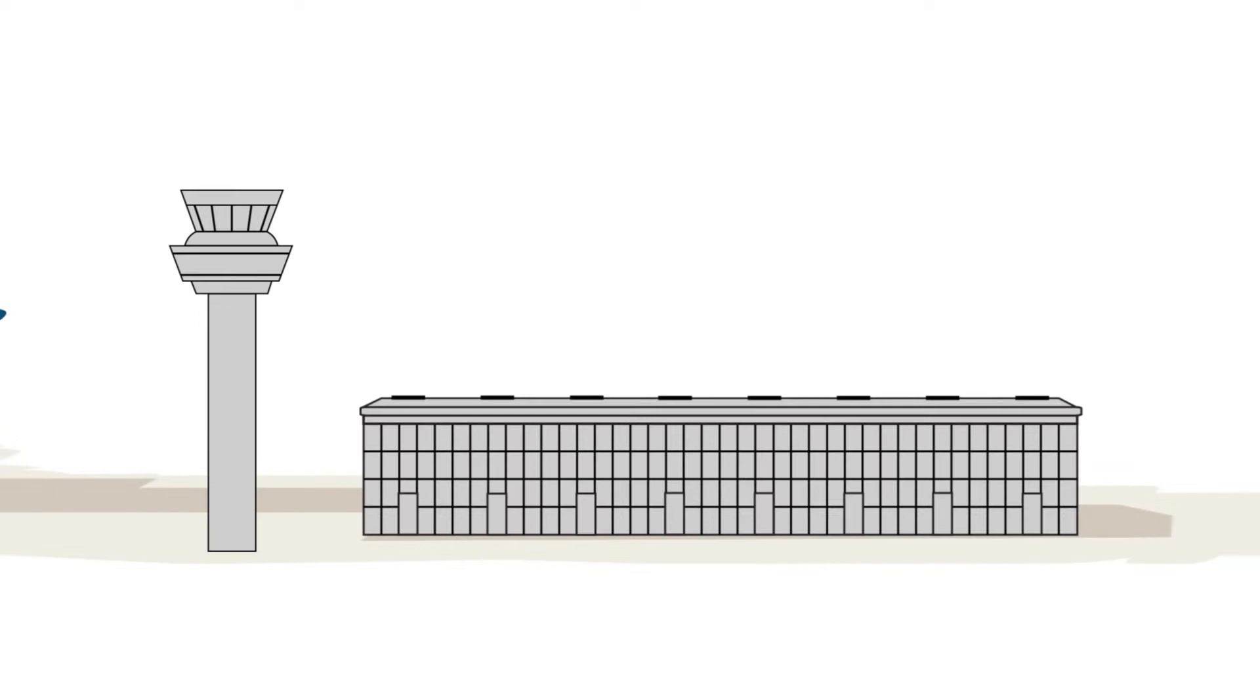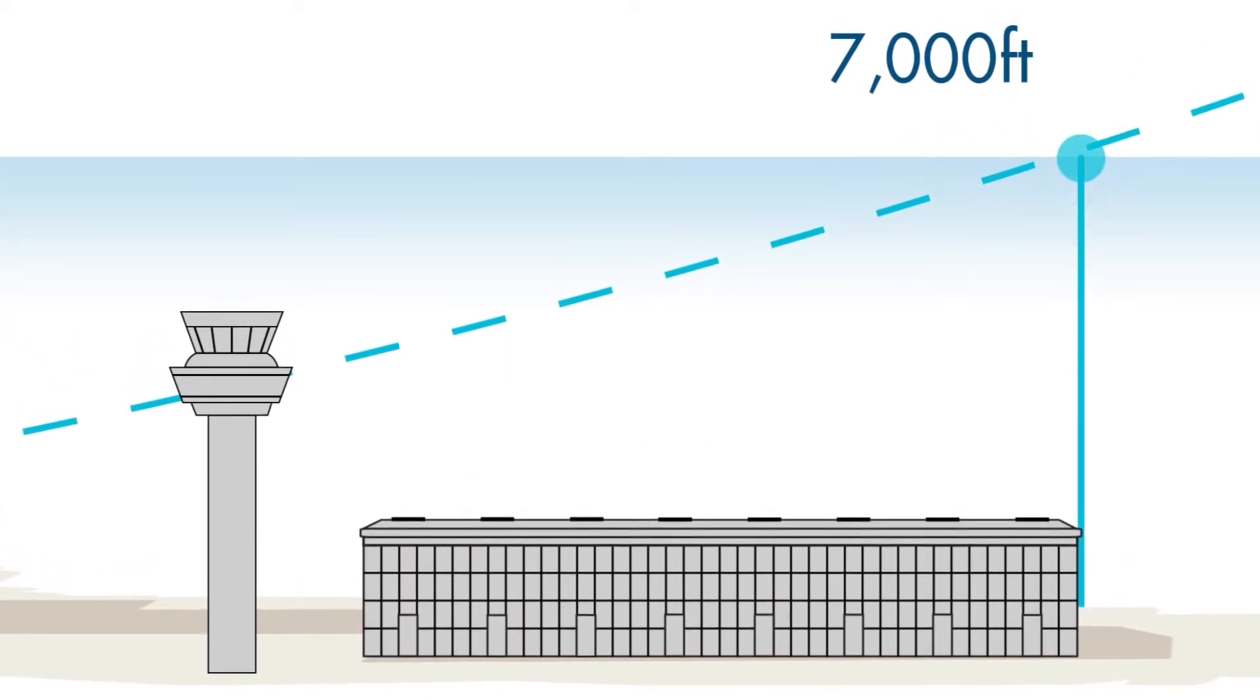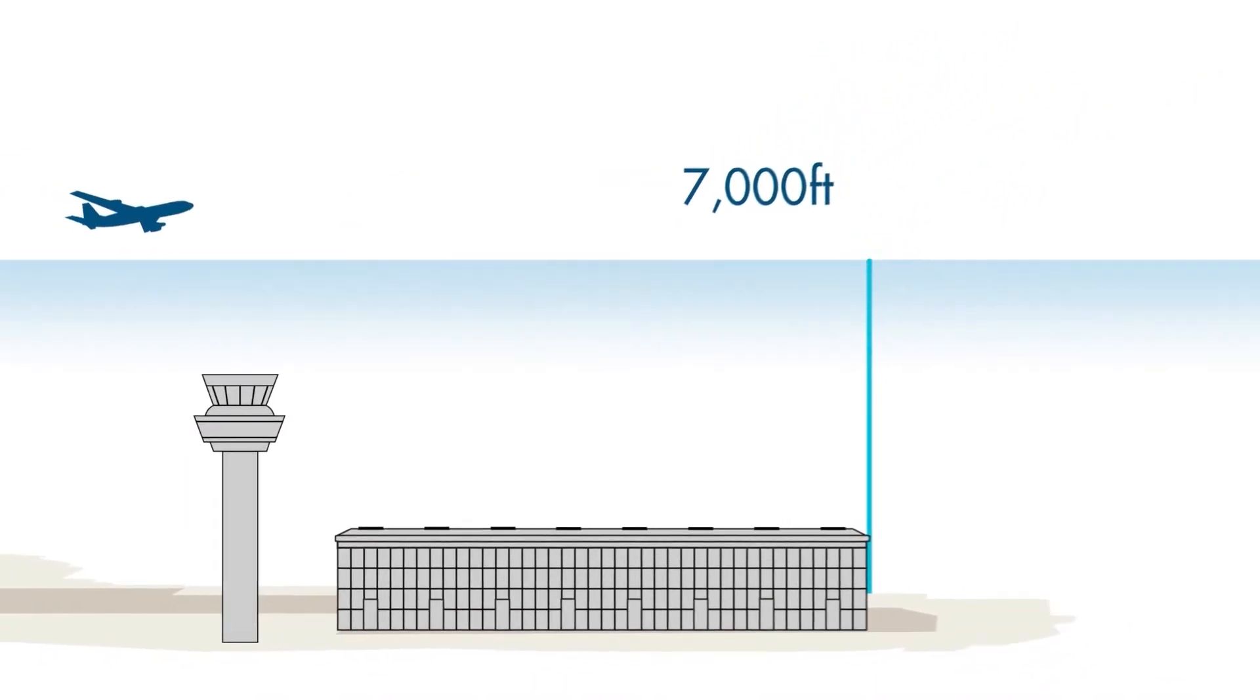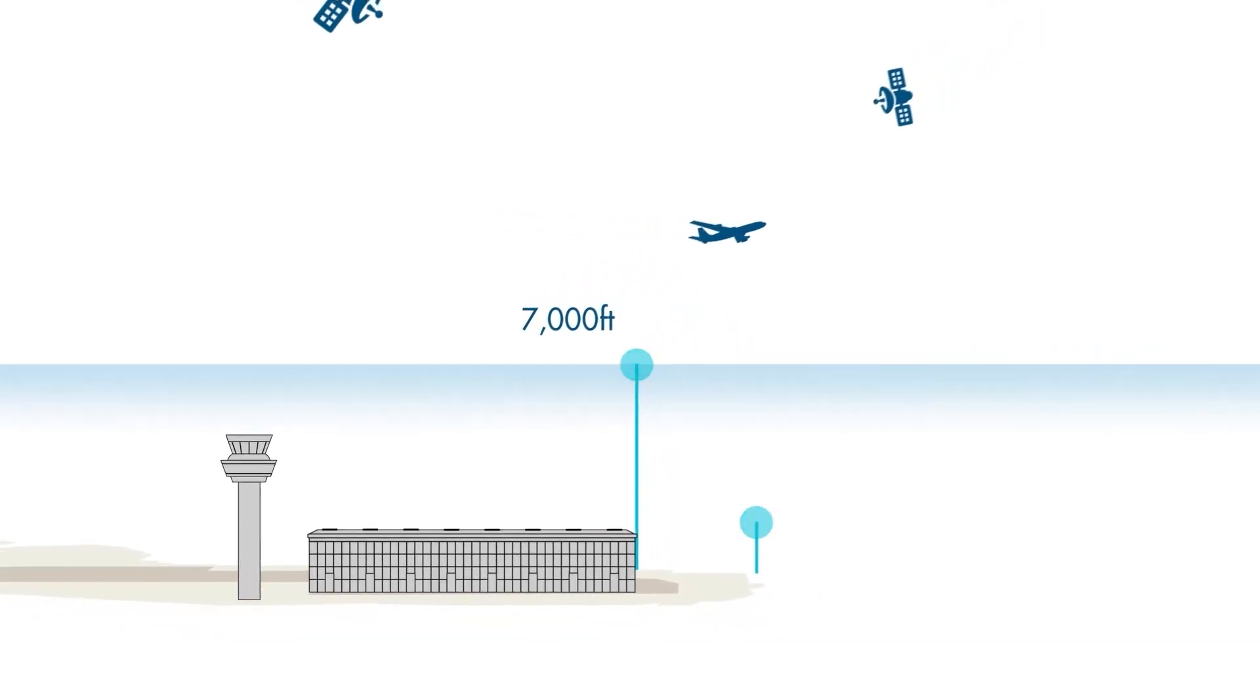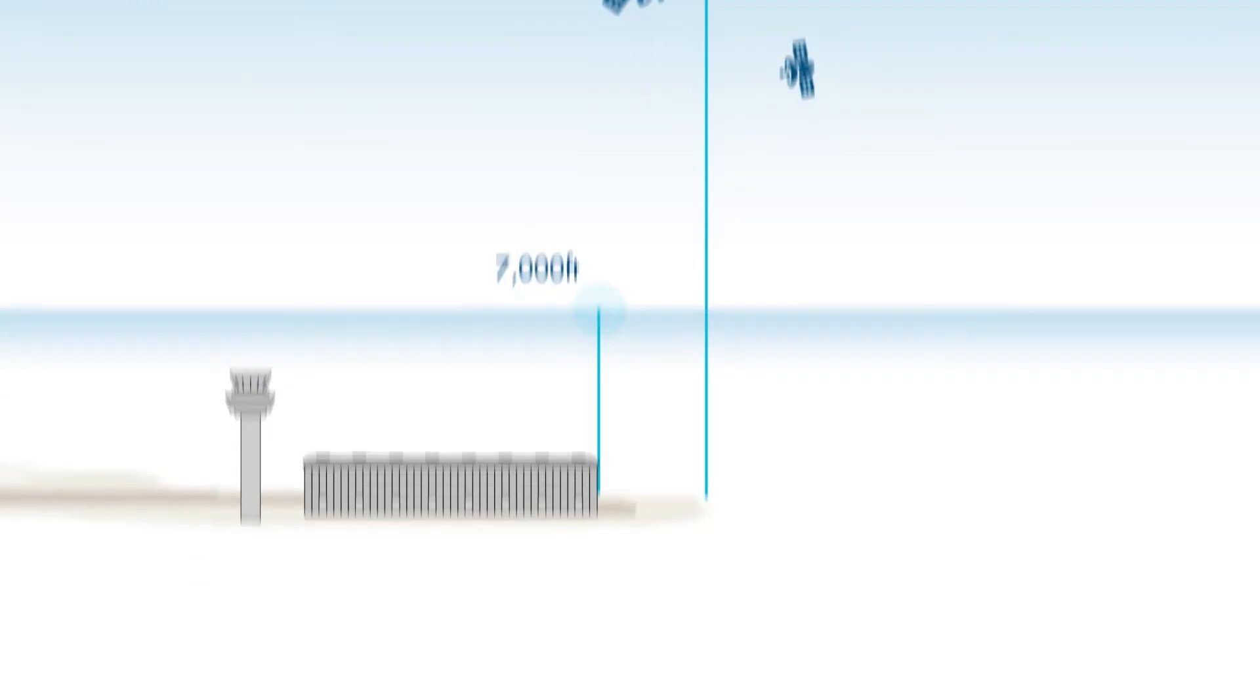All UK airports are required to take a fresh look at their current flight paths up to 7,000 feet as part of the government's airspace modernisation strategy. Meanwhile, NATS, the UK's air traffic navigation service provider, is modernising airspace above 7,000 feet.